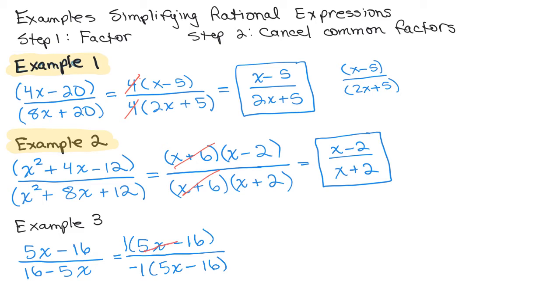So the 5X minus 16's cancel, but I get 1 over negative 1, which is equal to negative 1. This is similar to a problem like 7 over negative 7. If you have opposites, it's negative 1.